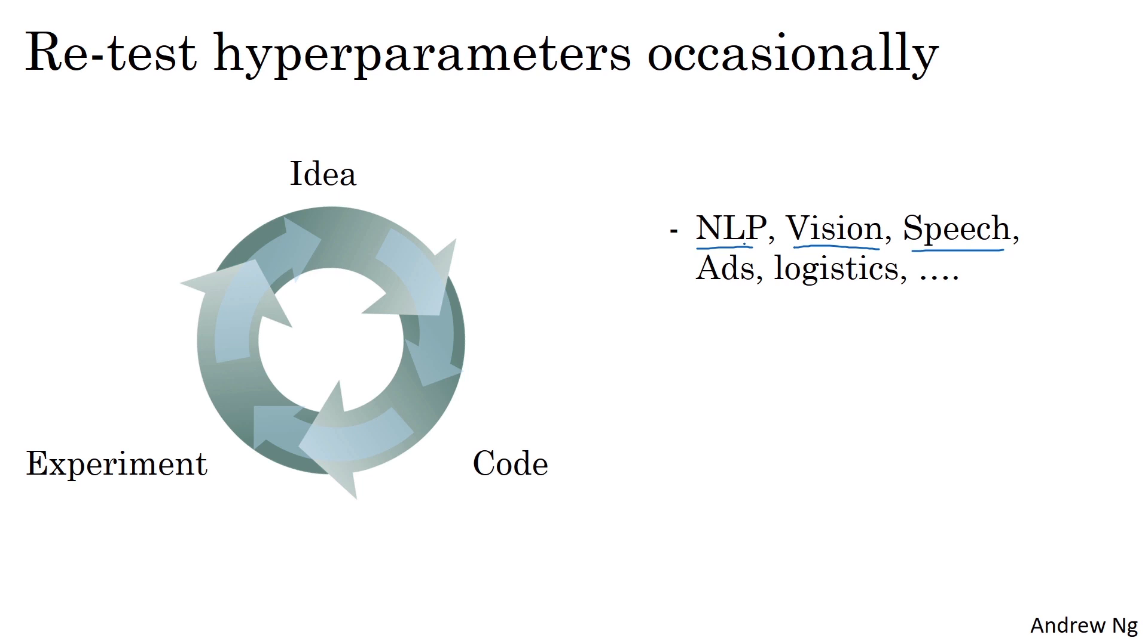So one nice development in deep learning is that people from different application domains do read increasingly research papers from other application domains to look for inspiration for cross-fertilization. In terms of your setting for the hyperparameters though, I've seen that intuitions do get stale.